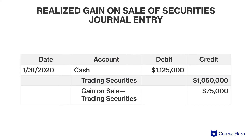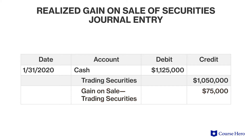Suppose that on January 31, 2020, Lucky Corporation sells its stock investment for $1,125,000 on the open market. The first step is to record the receipt of cash of $1,125,000. The next step is to remove the investment from the books. The remaining amount is the gain on the sale. Note that the actual gain is $125,000 because the investment was initially purchased for $1,000,000. However, $50,000 was already included in earnings when the investment was written up to its fair value.